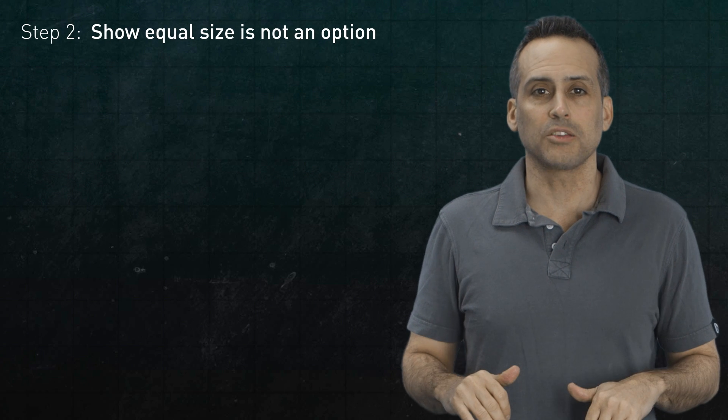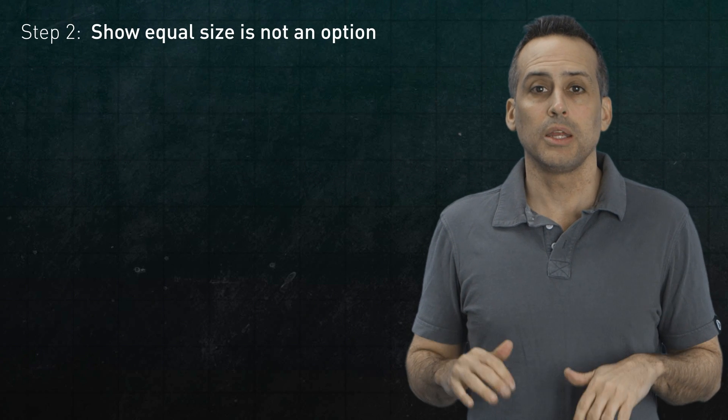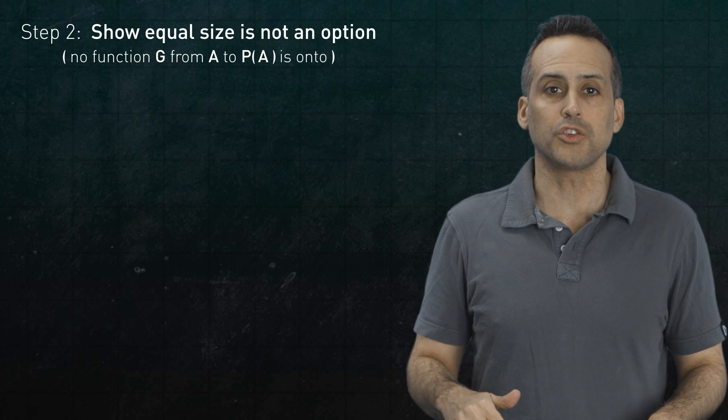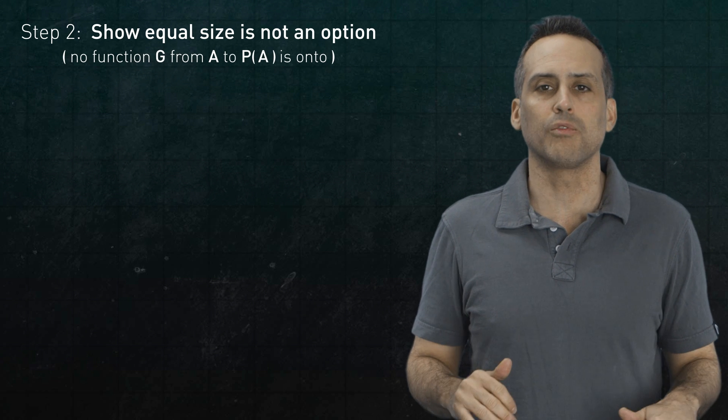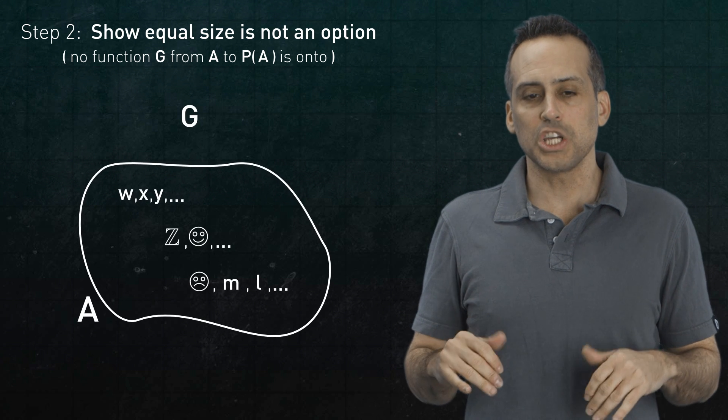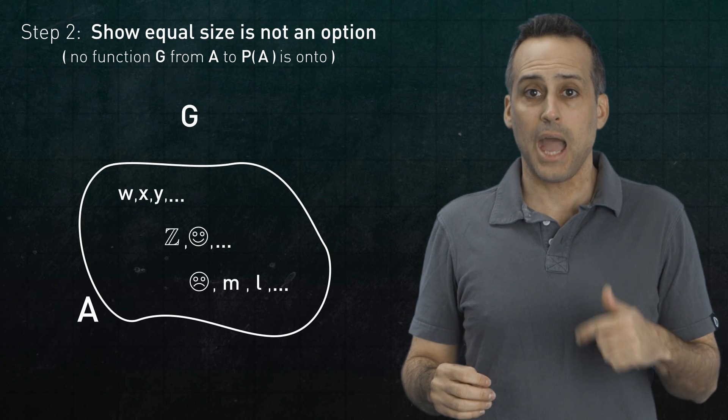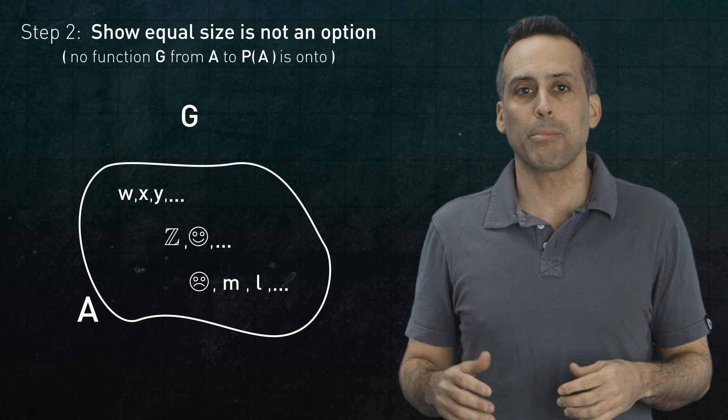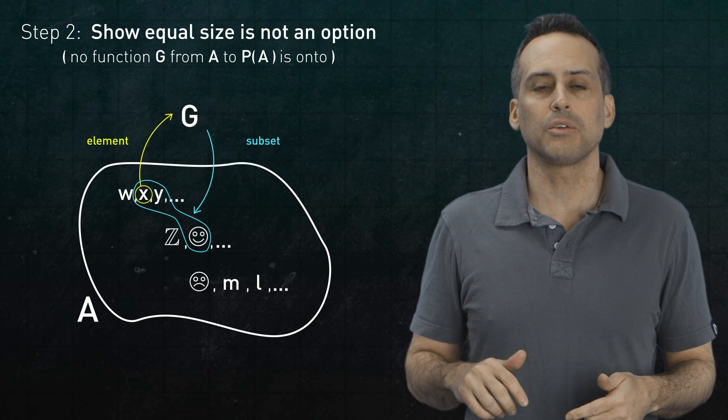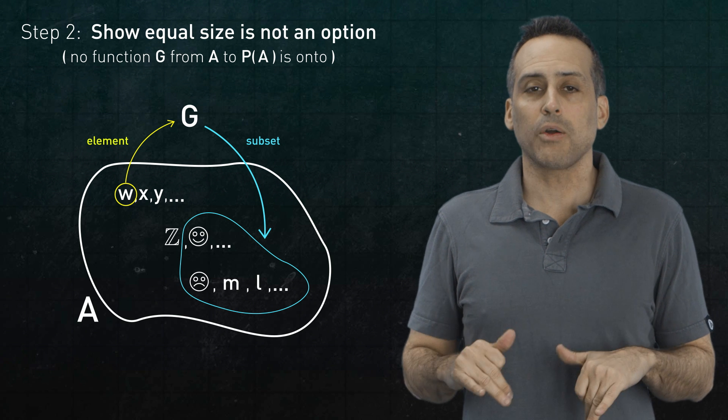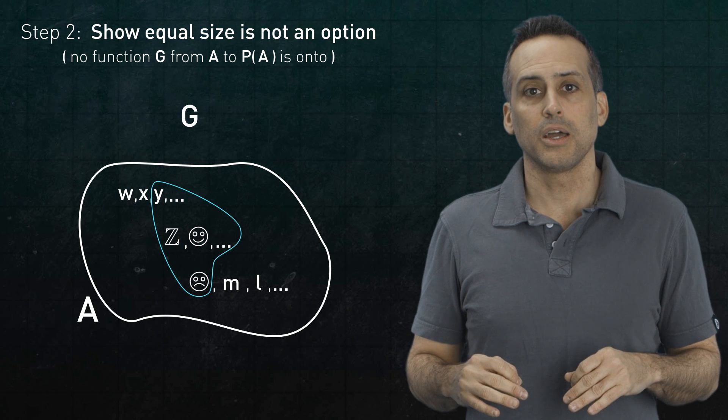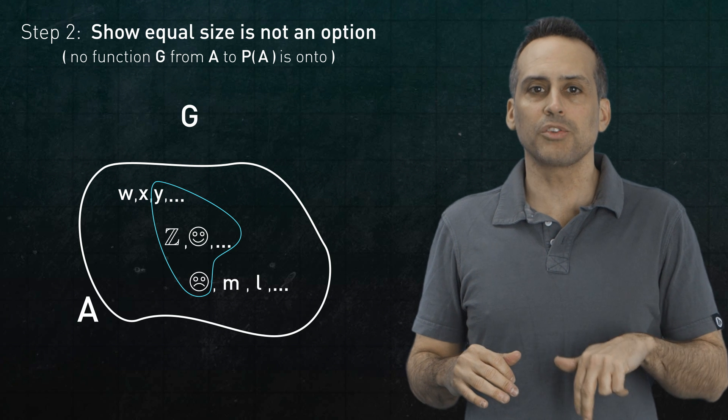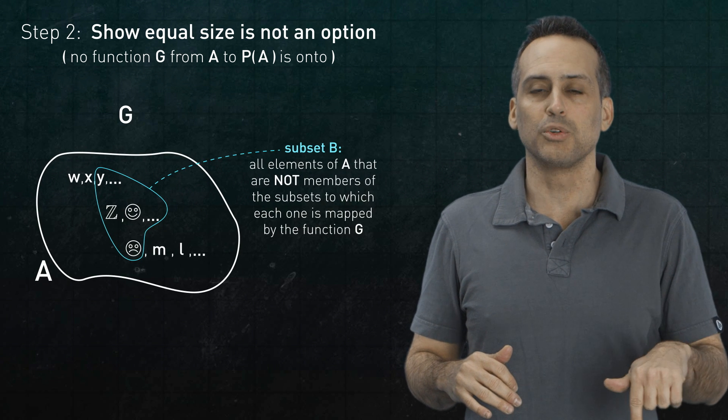Now for the second step, we'll show that equal size is not an option. Namely, that no function G from A to its power set is onto. There will always be leftovers in the power set. Remember, inputs to G are elements of A, and the outputs of G are whole subsets of A. So for instance, G might map this element to this subset or that element to that subset. Fine. Now consider a particular subset of A. Namely, the subset of elements, none of which are members of the subset that they get mapped to by G. Let's call this subset B.